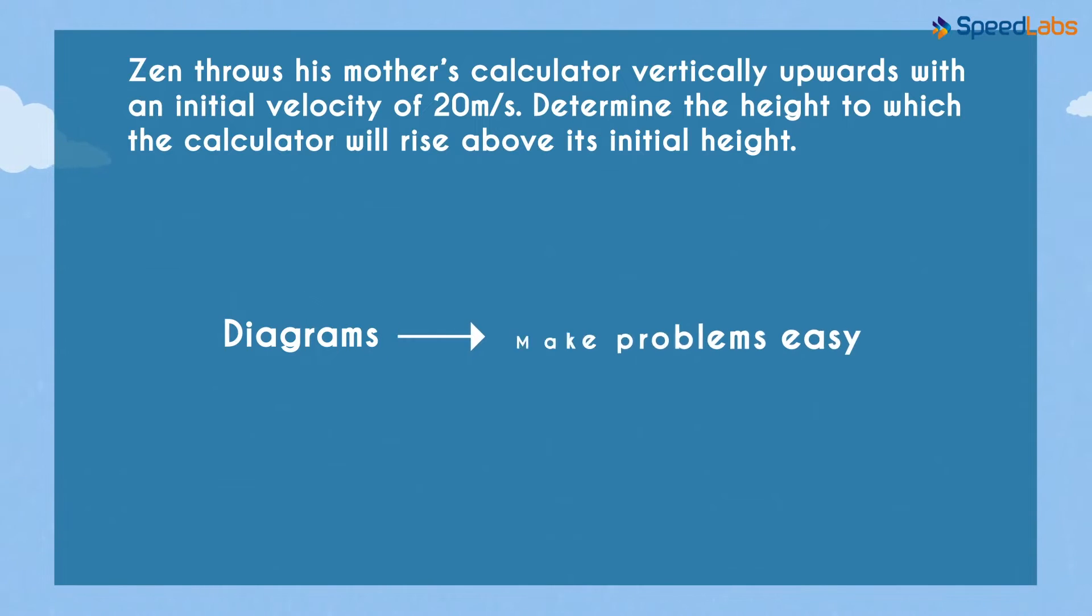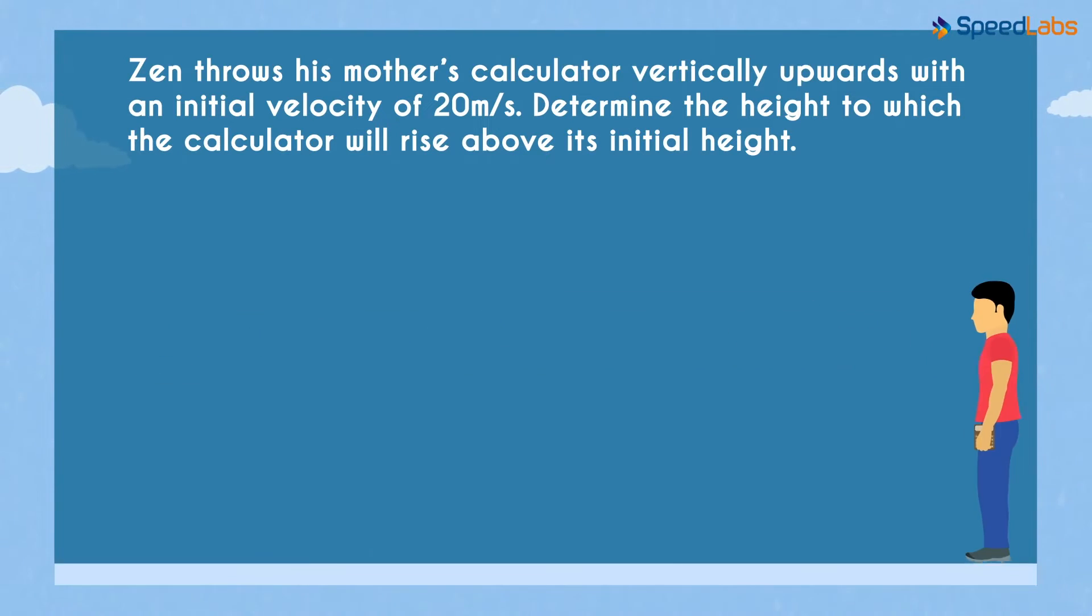Word problems always get easier with diagrams. Say this is the ground level, and this was the initial height from which Zen threw the calculator upwards.